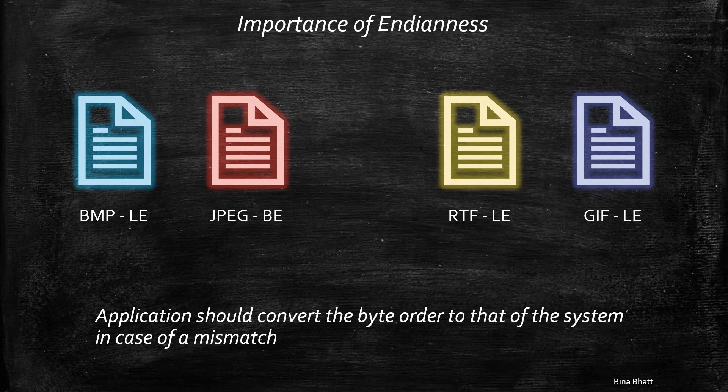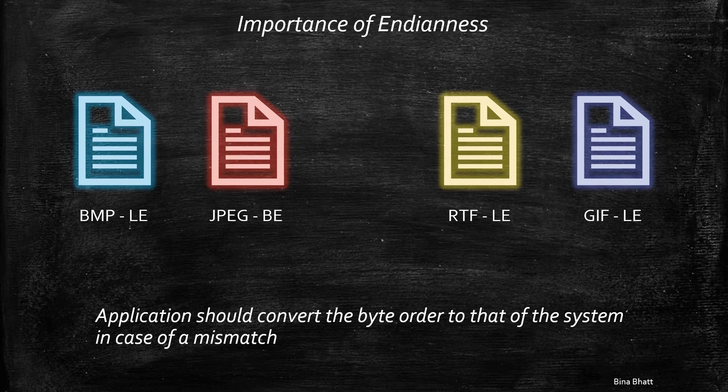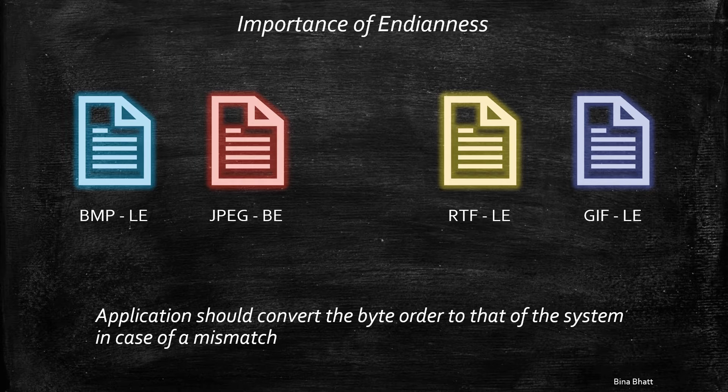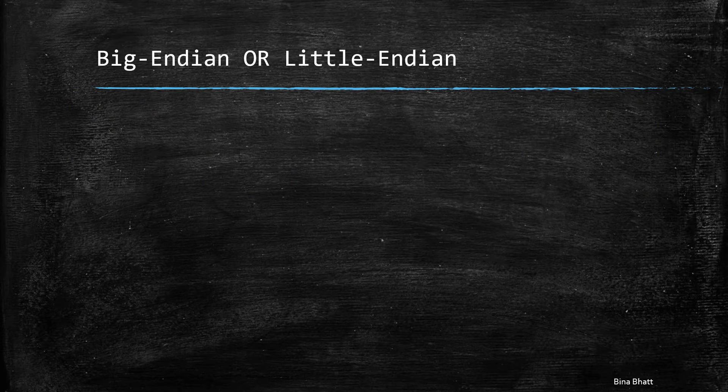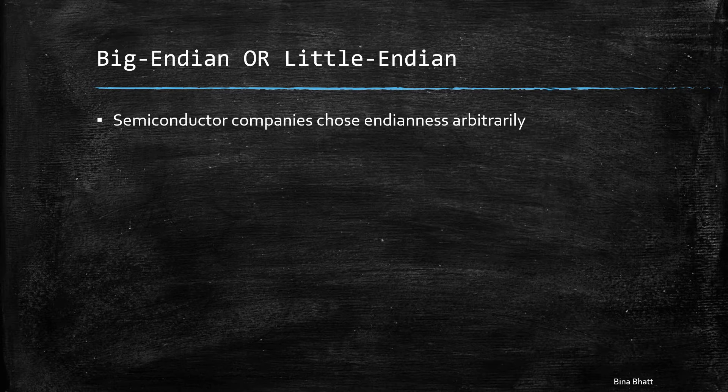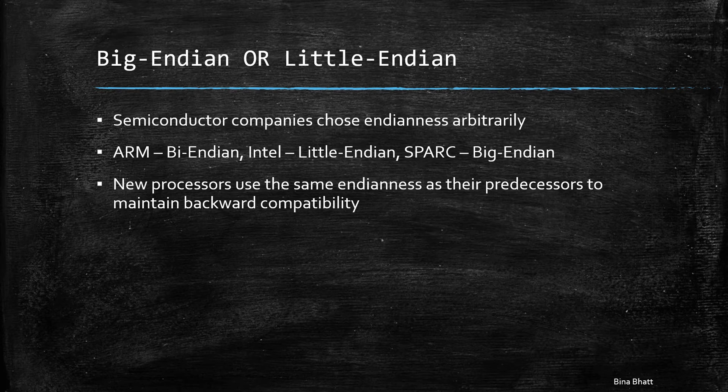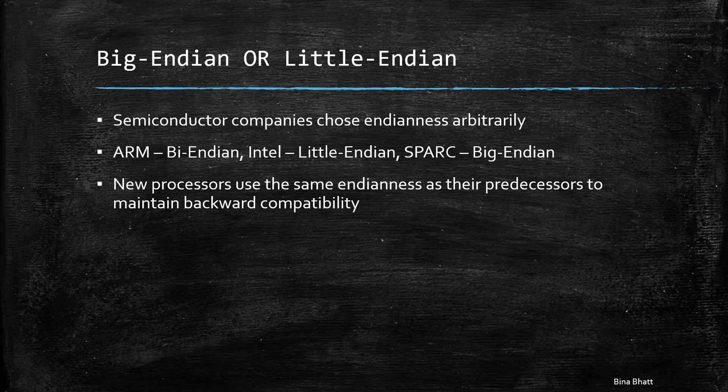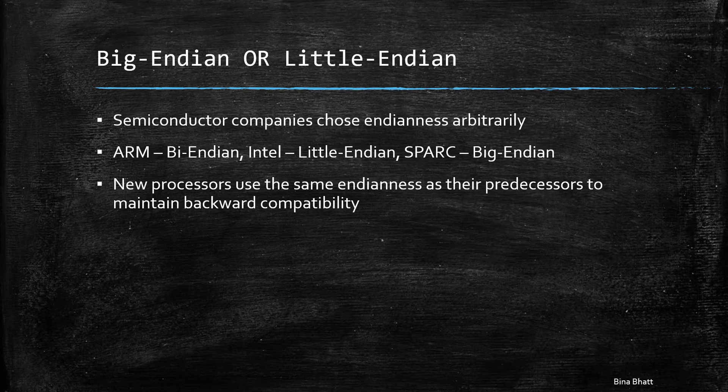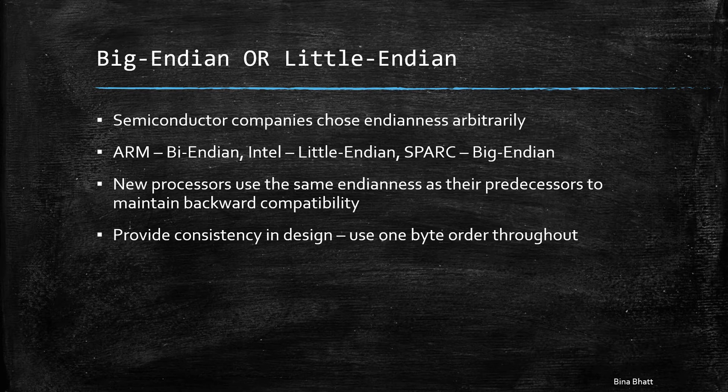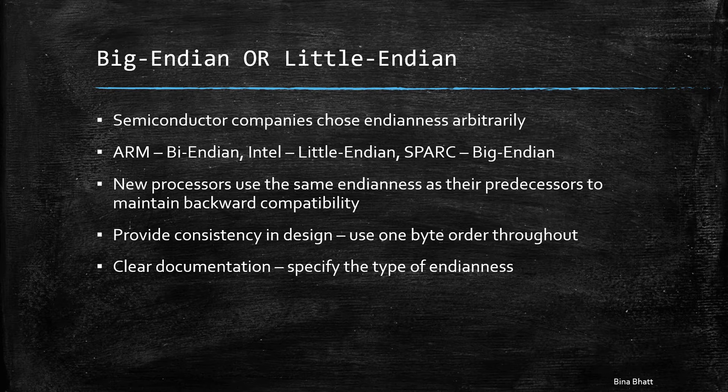I feel life would have been much easier if there was only one universally accepted way of storing the bytes, that is either big endian or little endian. It would have saved us from a lot of unnecessary and time-consuming complications. But semiconductor companies chose the endianness arbitrarily and till date they follow the same byte order to maintain backward compatibility. Thus, it is unlikely that we'll ever have a standard way of doing things. The only thing that we can provide, if we are dealing with endianness related tasks, is consistency in our designs and clear documentation to avoid any confusion.